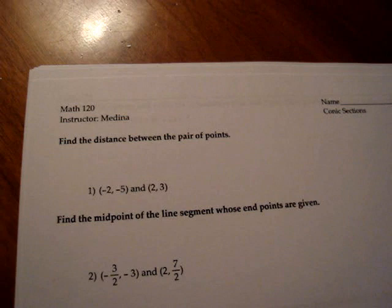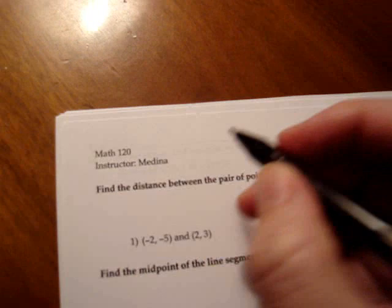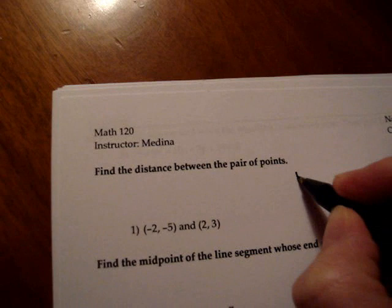The first topic we're going to do is we're going to review section 2.8 and that is to find the distance between a pair of points. So first to find the distance we have to remember we have our distance formula or you can just remember the Pythagorean theorem. So I'm going to do it using the Pythagorean theorem idea.